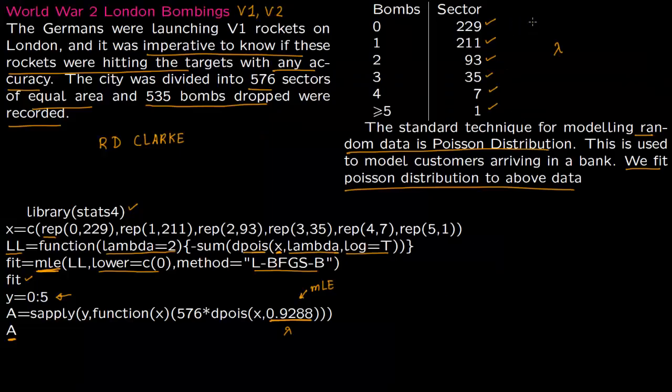From our running the data we got the values as 227, 211, 98, 37, and 1, so we just drop the decimal. We got these sectors from our lambda which was 0.92. Notice that these are very close to each other, so you can say that the bombs are dropping randomly.